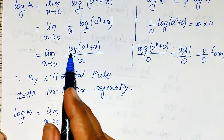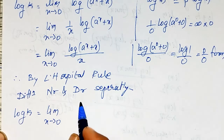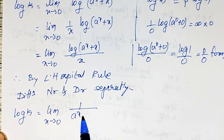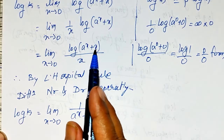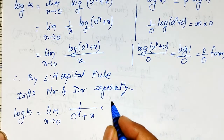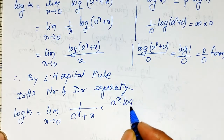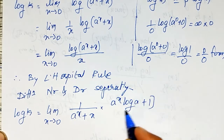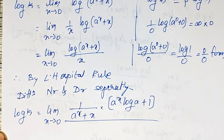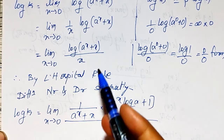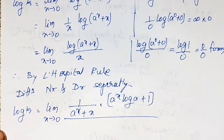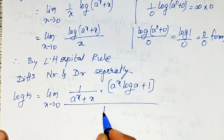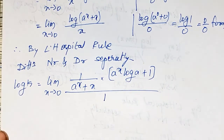The differential of log(a raised to x plus x) is 1 divided by (a raised to x plus x), multiplied by the differential of (a raised to x plus x). The differential of a raised to x is a raised to x times log a, and the differential of x is 1. Since L'Hôpital's rule applies numerator and denominator separately, I do not apply the quotient rule. The differential of the denominator x is simply 1.